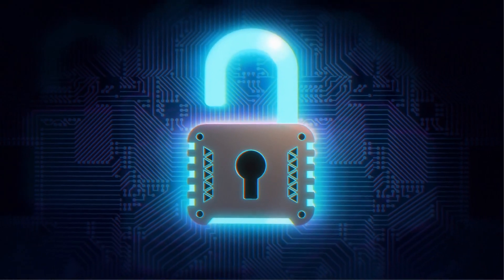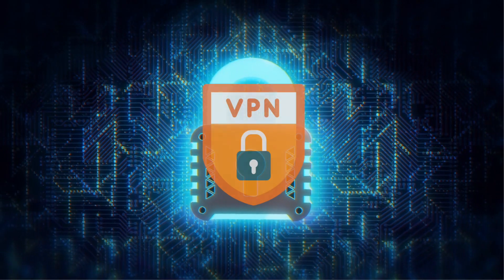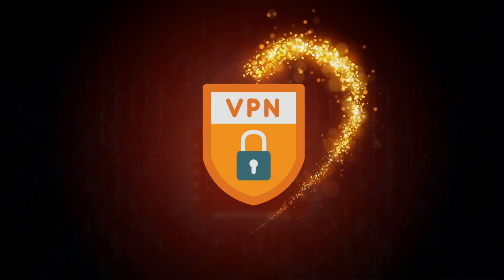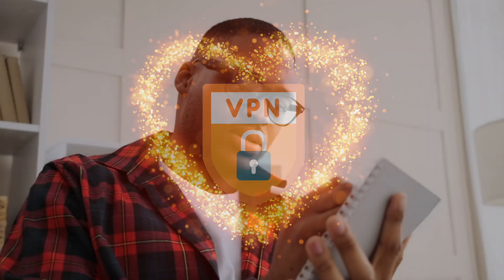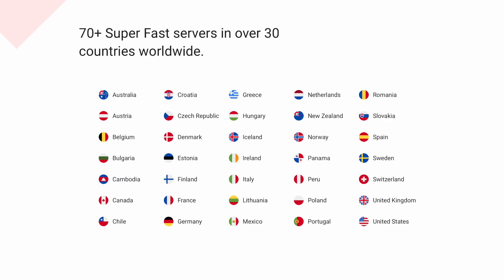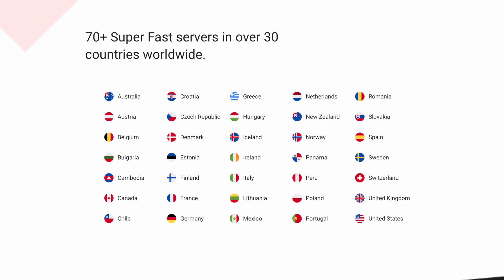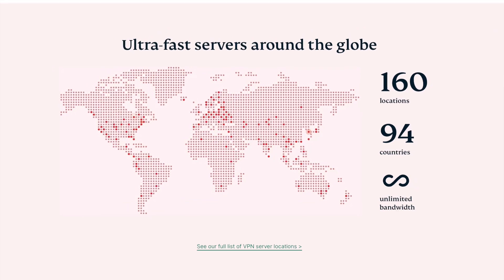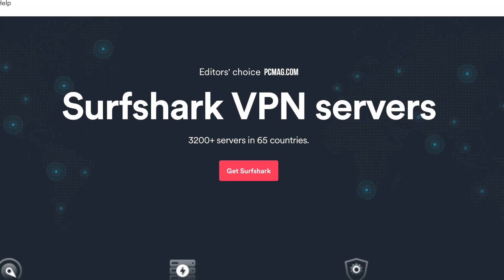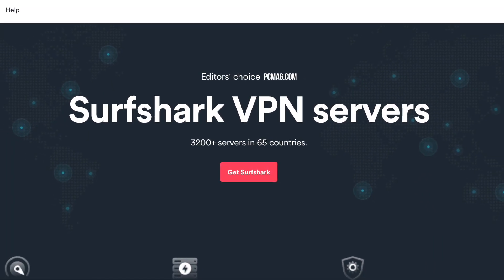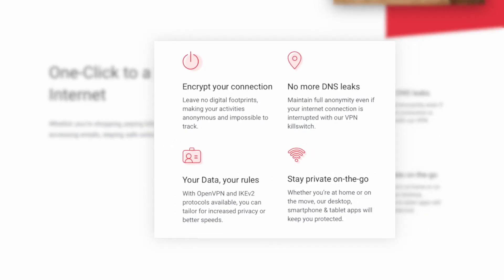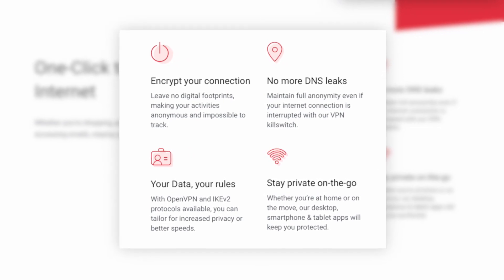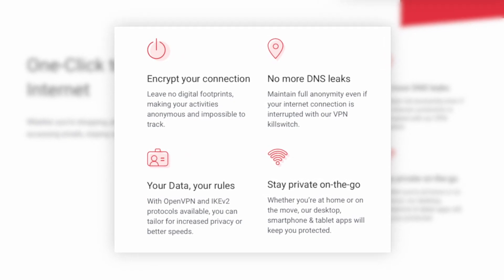Speaking of privacy, TotalAV also includes a VPN. Since we're all about VPNs on this channel, it's one of the main reasons we tried TotalAV in the first place. Now, the VPN has 70 servers in 30 countries, so it's not like ExpressVPN or Surfshark, which has thousands of servers. But the VPN will encrypt your data and keep your online activities 100% private.